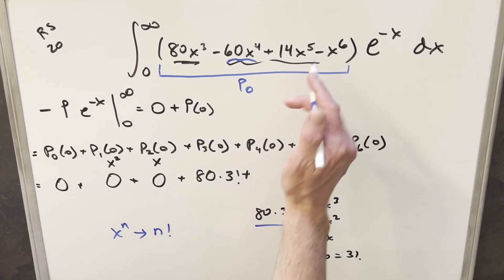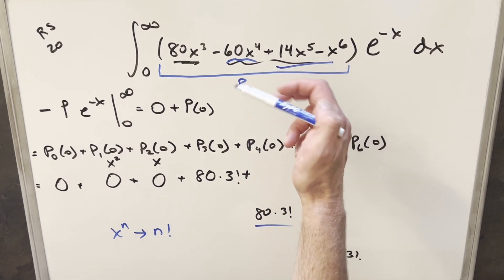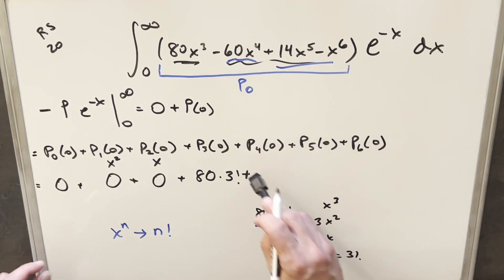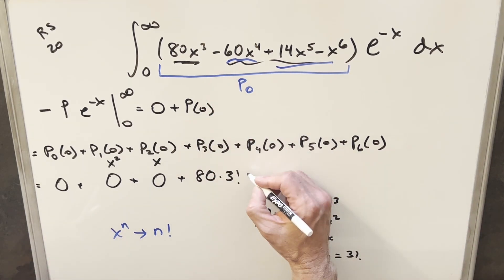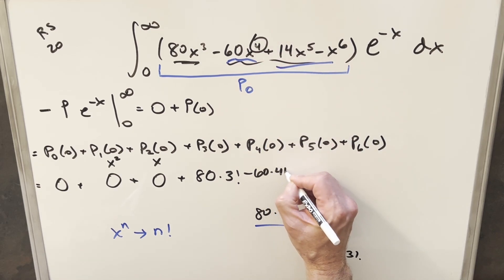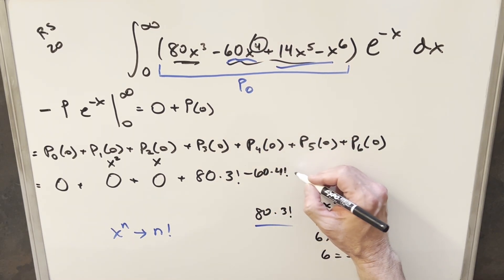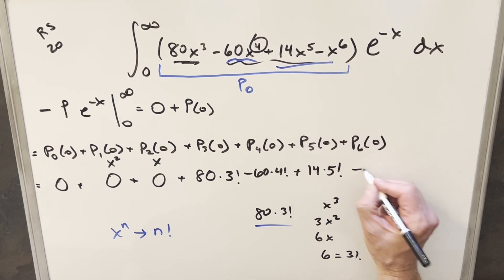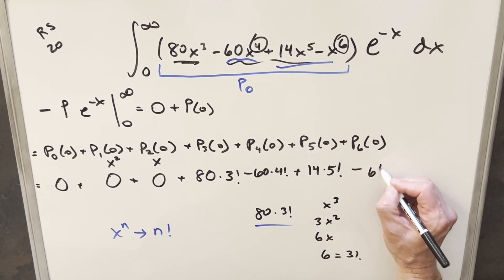Because for this term, we already differentiated this down to a constant. So we differentiate again, this is going to become zero. And these terms are still going to have x's in them. So those are going to be zero. So what I can do using the same trick is write this as minus 60 times 4 factorial. And then doing the same thing here for the fifth one, we get 14 times 5 factorial. And for the last one, we get minus 6 factorial.